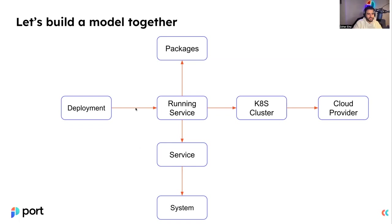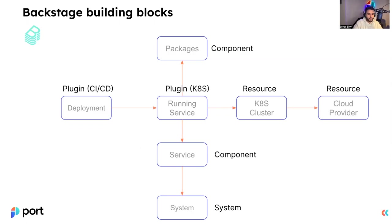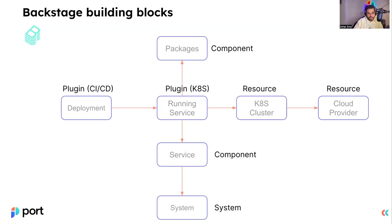This is how I chose to architect my basic model, and this is how I recommend you think about an initial use case for your software catalog. To accomplish this kind of data model with Backstage, you're provided with all types of ways to reflect these entities and relationships — these are called kinds. You have five kinds provided: the component, the resource, the API, the system, and the domain. For this example, we use the component type to represent the package and the service, and the resource to represent Kubernetes clusters and cloud providers. The building blocks provided by Backstage are good to show metadata brought in a GitOps way — manifest files residing in your Git repository that are fetched into the Backstage software catalog.